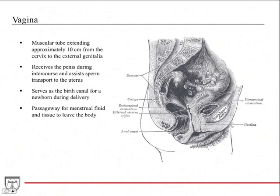The vagina is a muscular tube that extends approximately 10 centimeters from the cervix to the external genitalia, including the labia minora and labia majora. It receives the penis during intercourse and helps transport sperm to the uterus to ensure fertilization. It also serves as the birth canal during delivery and as a passageway for menstrual fluid and tissue to leave the body during menstruation.